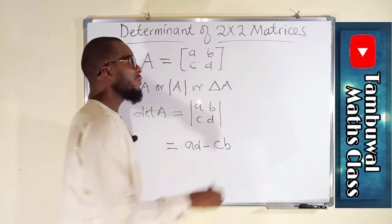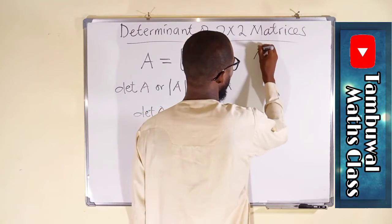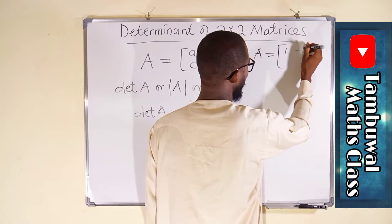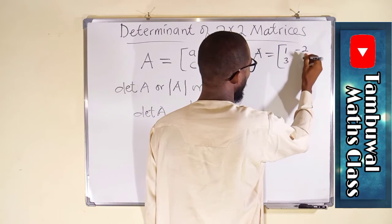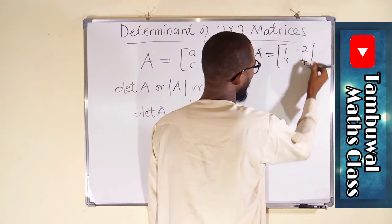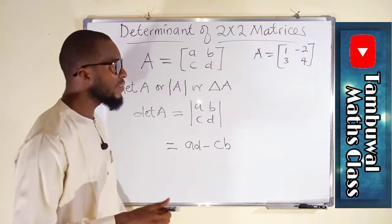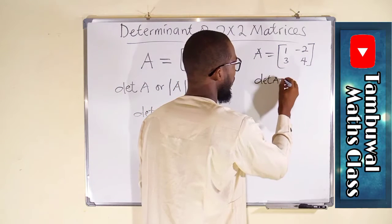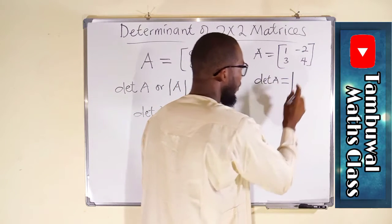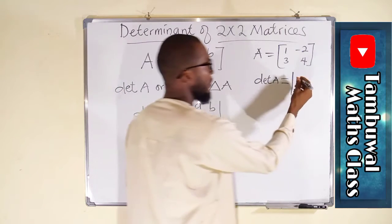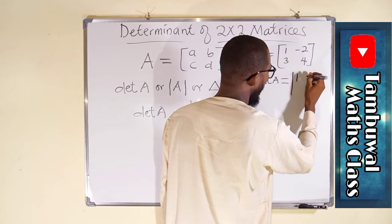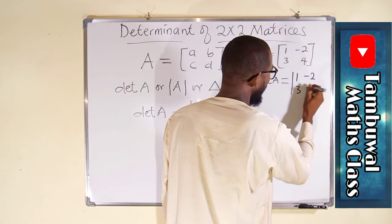Now let us take some examples. Suppose we have a matrix A as 1, negative 2, 3, and 4. We want to find the determinant of this matrix. We can write it as det A equals, use this vertical bar, and write all the entries, 1, negative 2, 3, and 4.